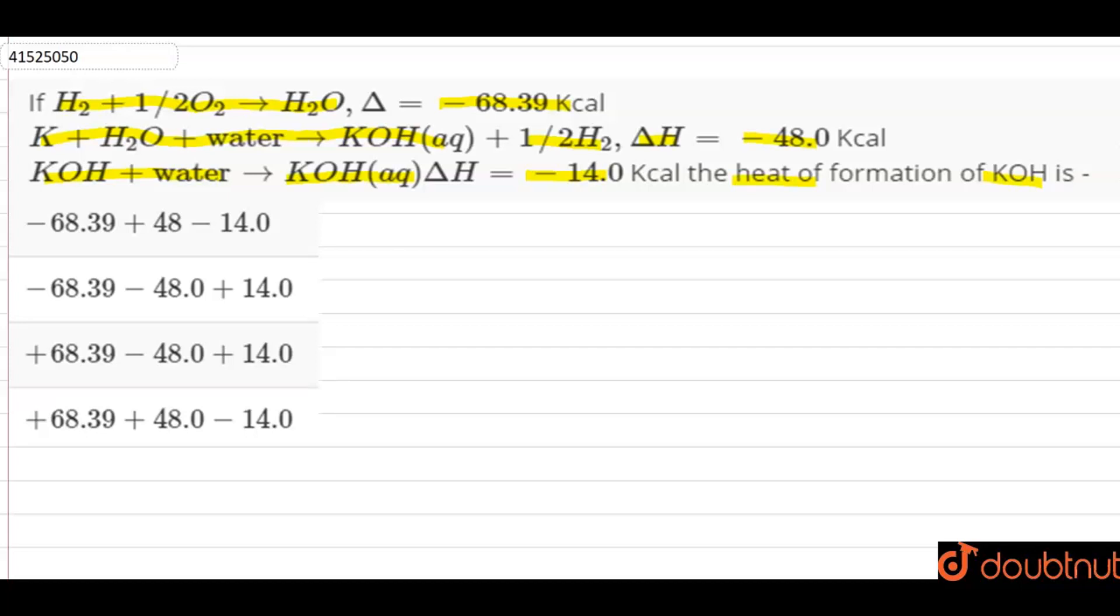So basically, heat of formation of KOH. KOH can form when we have K solid plus half O2 plus half H2 gives us KOH solid. So we need to find the delta HF for this.